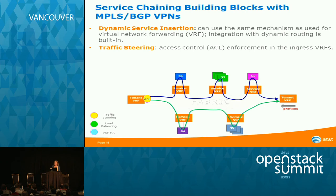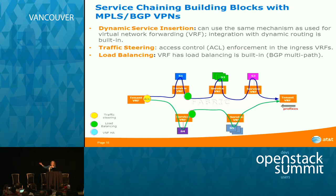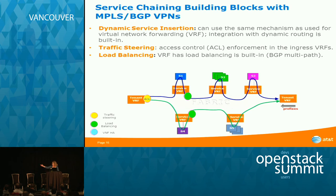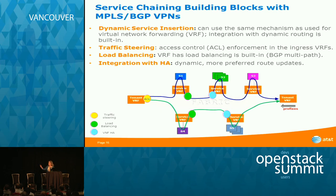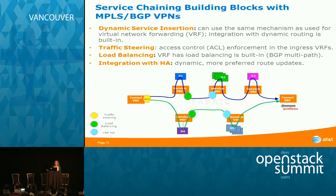The ACL at ingress allows, for example, port 80 traffic to go through the top chain and non-port-80 traffic through the bottom chain. Load balancing is inserted at the VRF of the previous hop for scale-out services — such as the green S2 service. HA integration is applied at scale-out service points: if any failure occurs, the VRF is informed, BGP propagates this information upstream, and the upstream hop removes the failed VM from the load balancing set. These building blocks — VRF, ACL, BGP multi-path — implement service chaining without reinventing anything.